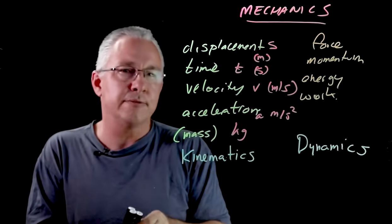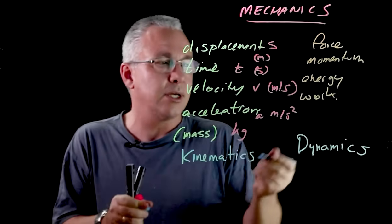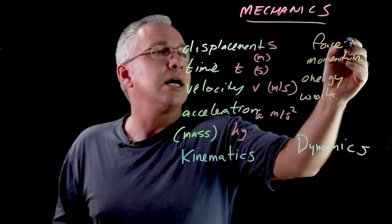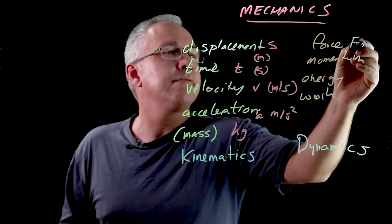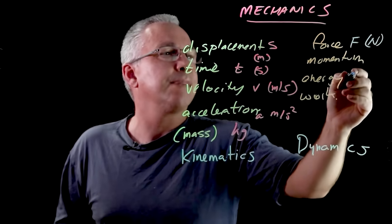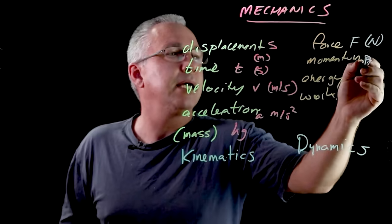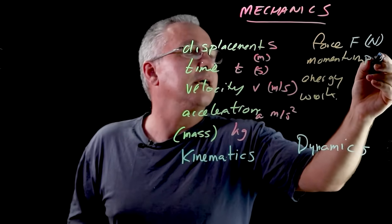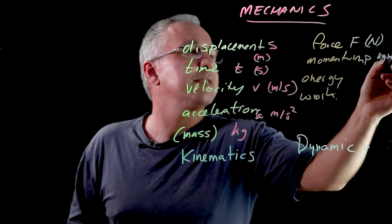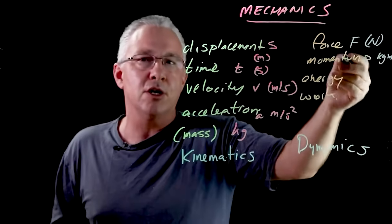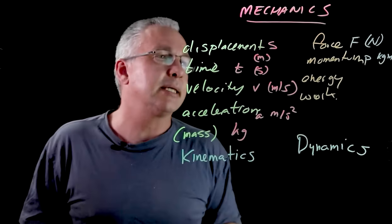Then over here we have a whole bunch of other units associated and symbols related to them. So force of course the symbol is f and we use the newton. Momentum becomes p and its symbol becomes the kilogram meters per second. Now you can see we've got the concept of mass here in our dynamics section.